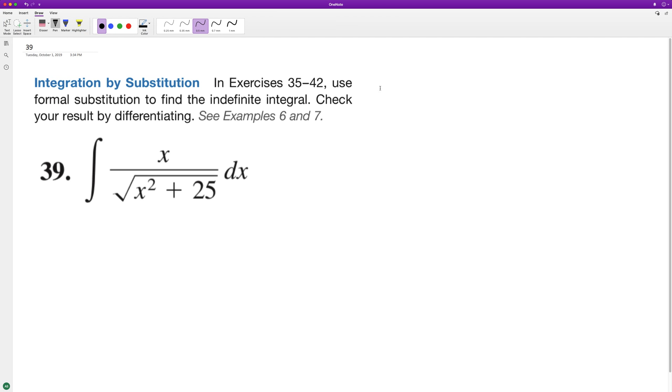We'll use u-substitution. We'll set u equal to x squared plus 25, and then du will be equal to 2x. So to get du equal to dx, we need to take one half du.